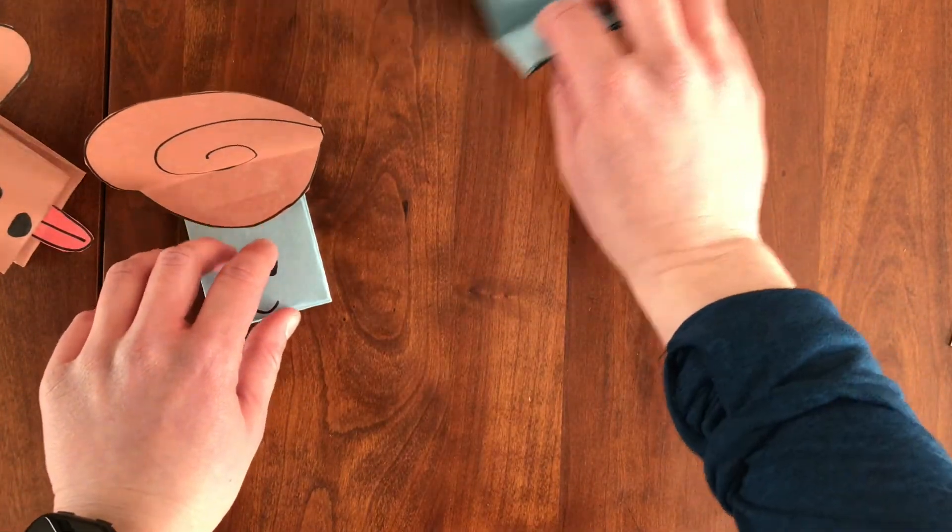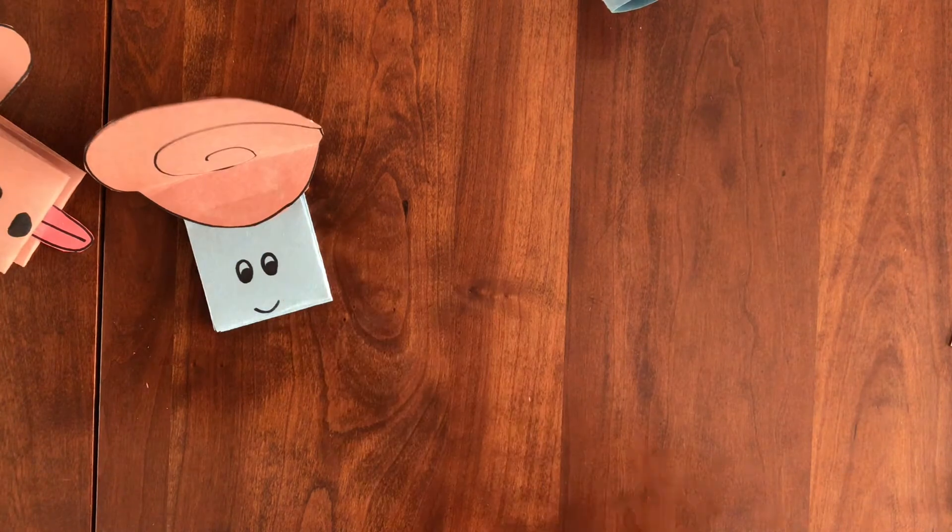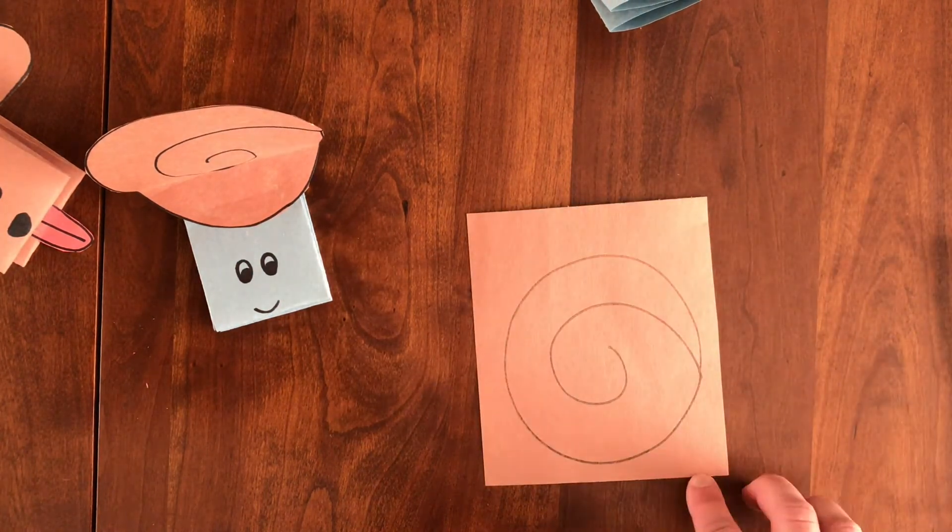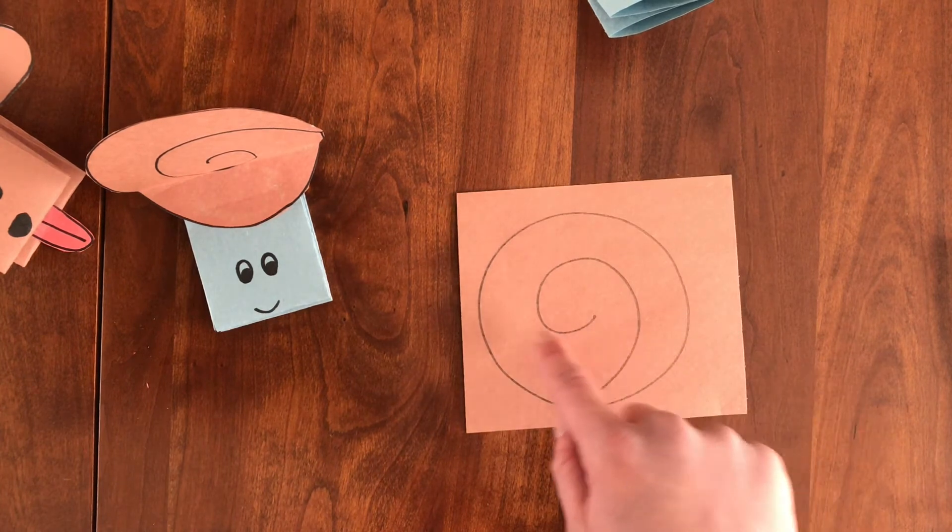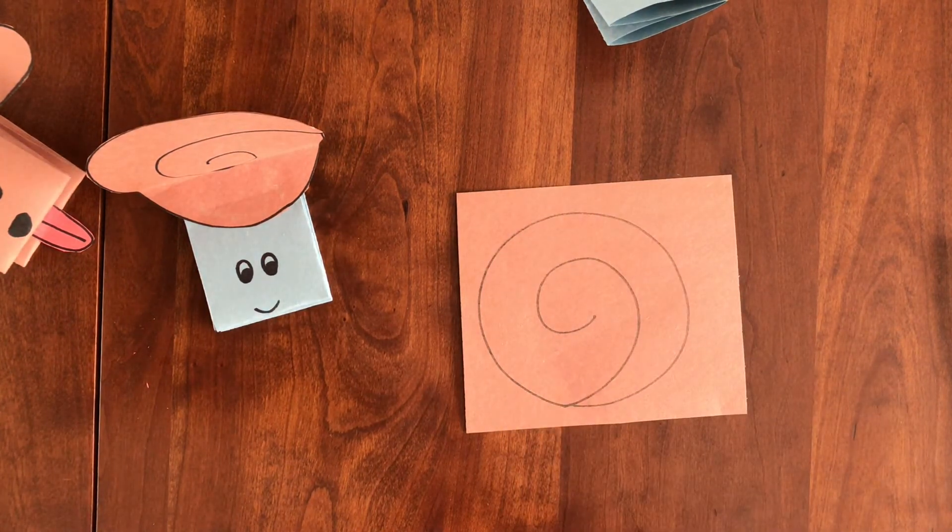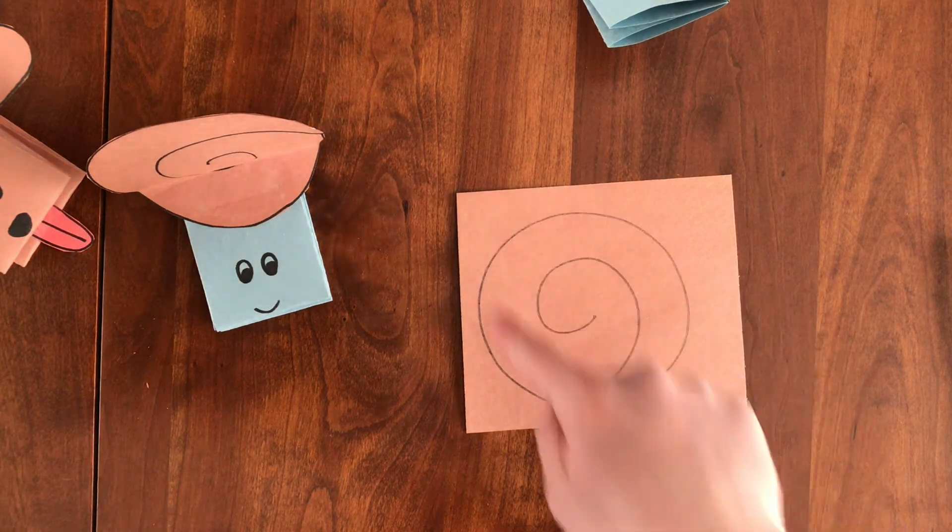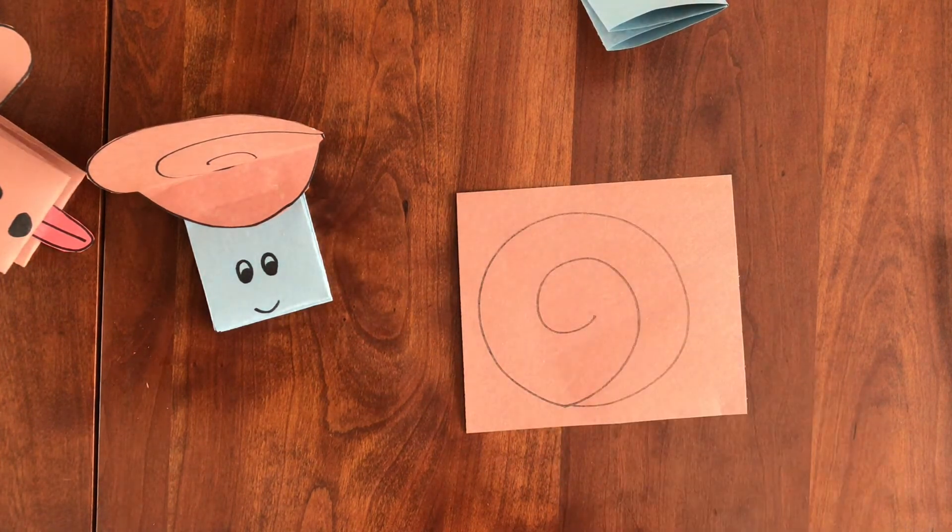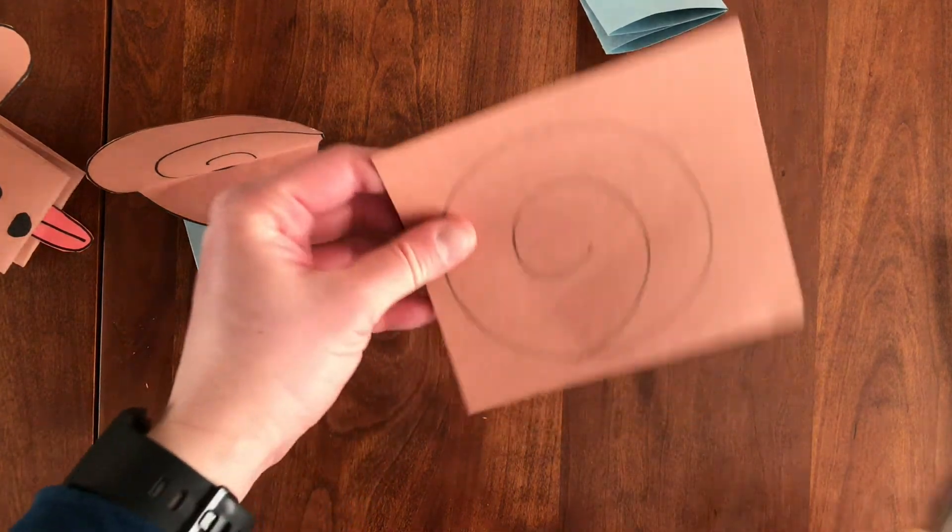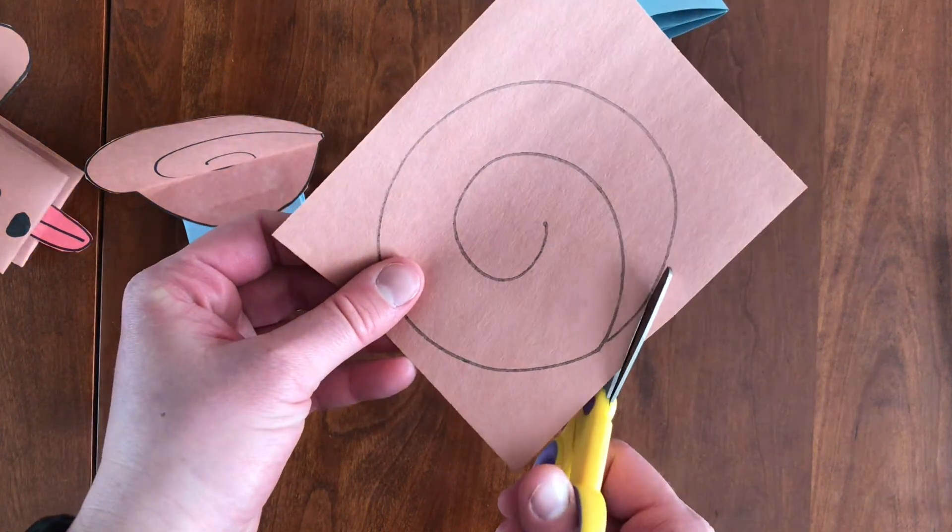And the only other part we need to make for snail is this shell. So that's when the other brown piece of paper comes in. And you can just kind of freehand draw a curly cue. That's what I did. You could start by drawing a circle and then bring that loop in to meet the middle. Or you could just draw a circle. That will work too for snail's shell. So then you're going to cut it out.